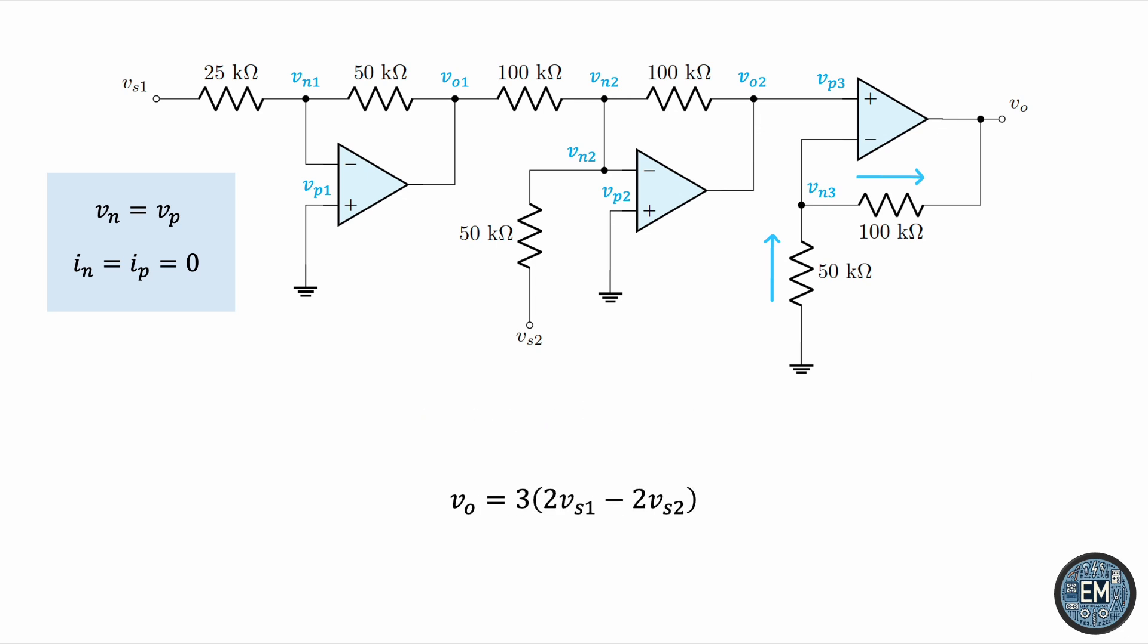VO is equal to 6Vs1 minus 6Vs2. So, we have completed the analysis of this scary-looking OPAM circuit. The output voltage VO is 6 times Vs1, the first voltage source, minus 6 times Vs2, the second voltage source. And that's the final answer.